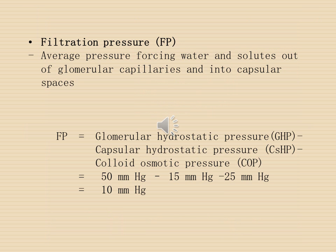Filtration pressure is also known as the net pressure. It is the average pressure for pushing water and solutes out of the glomerular capillaries and into the capsular space. The equation below shows how you calculate the filtration pressure value.